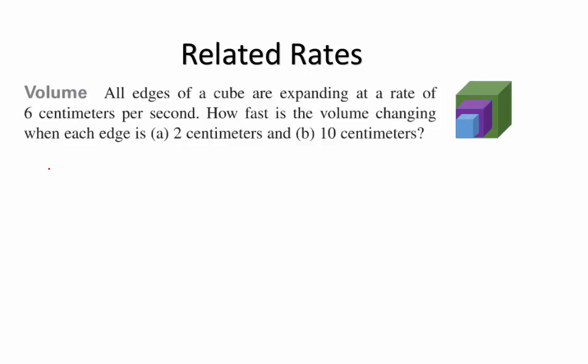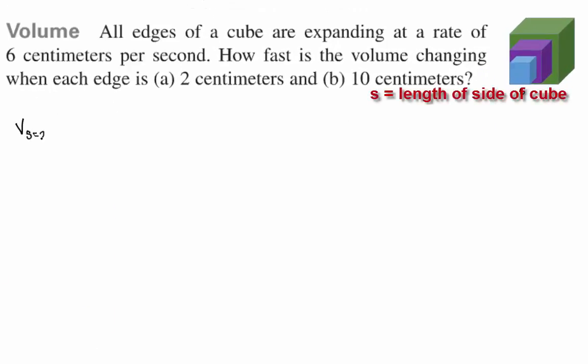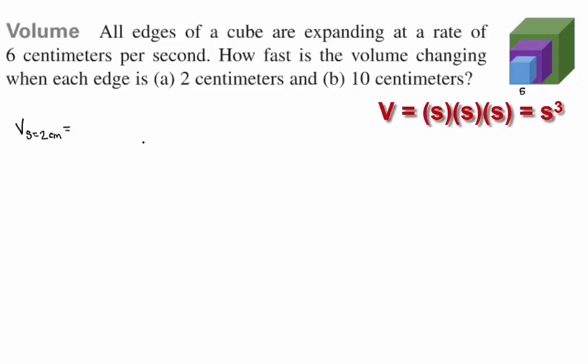Let's go ahead and calculate what would be the volume of the cube when the side of the cube is two centimeters. What is the volume? How do we calculate the volume of a cube? Length times width times height, right? But they're all the same. So s times s times s or s cubed. So in this case, it would be two cubed. If the side happened to be two, then we would have two cubed or eight centimeters cubed.